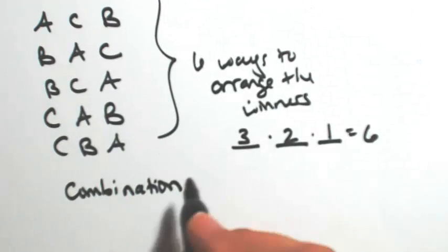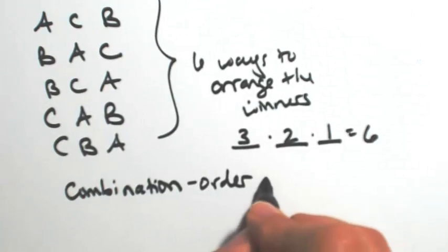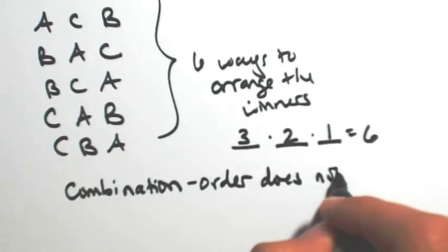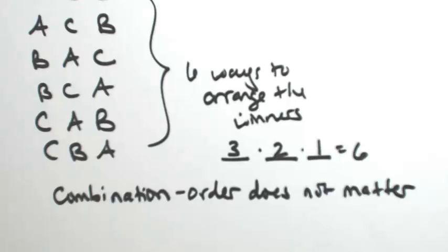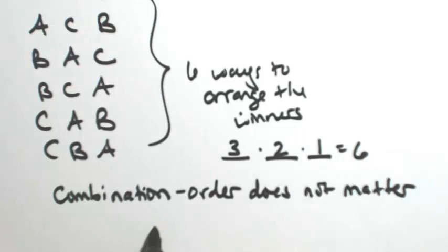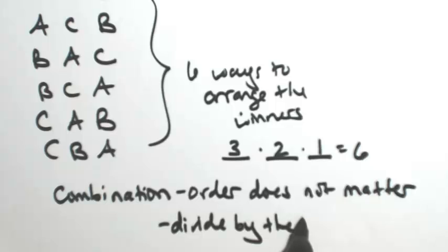In a combination, the order doesn't matter. If I switch A and B, they're still getting one assignment that they can skip. It doesn't matter which one I picked first. With the combination, you're going to divide by the number of repeats.